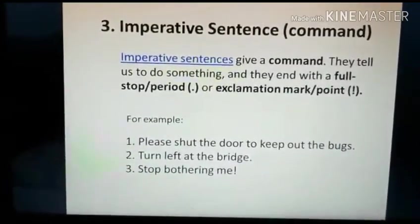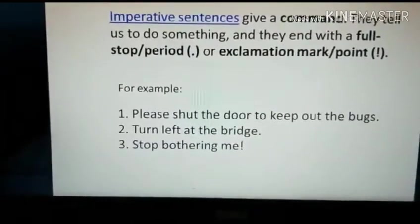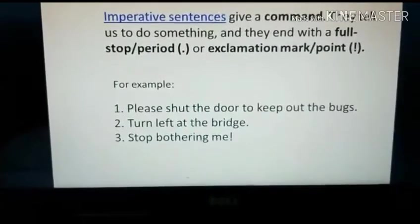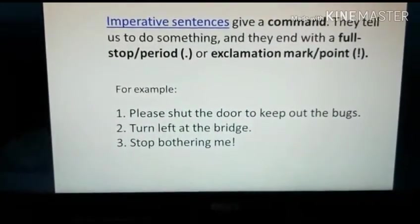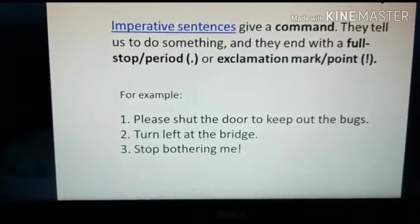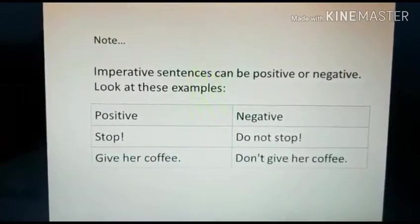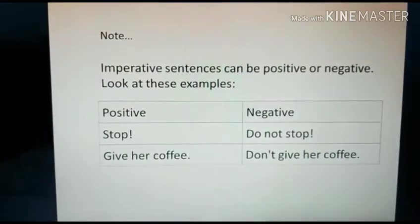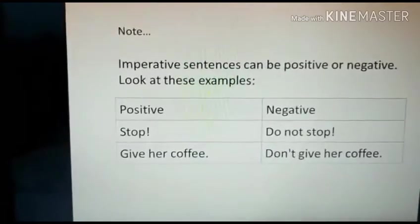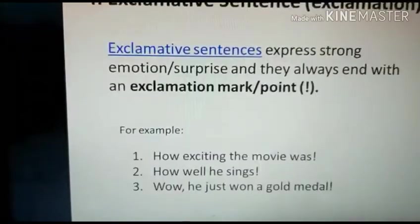Now we go to the third type: imperative sentences, or command sentences. Imperative sentences give a command — they tell us to do something, and they end with a full stop or an exclamation mark. For example: 'Please shut the door to keep out the bugs.' Second: 'Turn left at the bridge.' Third: 'Stop bothering me!' In some command sentences we use an exclamation mark. Imperative sentences can also be positive or negative — for example: 'Stop' versus 'Do not stop,' or 'Give her coffee' versus 'Don't give her coffee.'